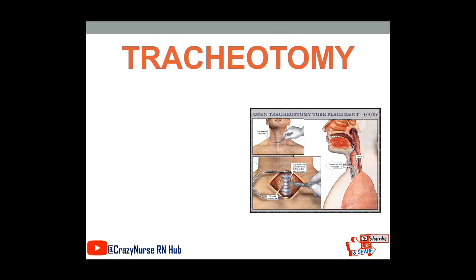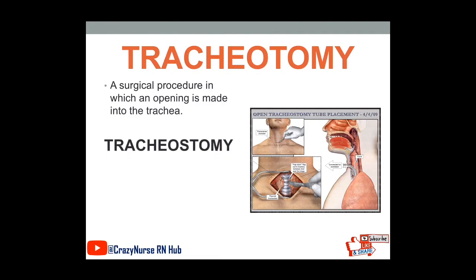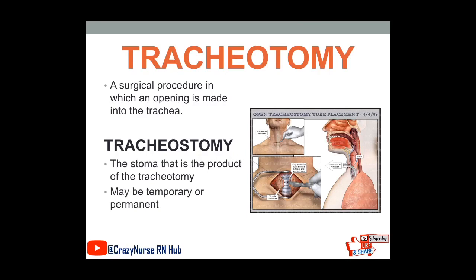We also have tracheotomy, a surgical procedure in which an opening is made into the trachea. We also have tracheostomy — this is the stoma that is the product of tracheotomy, and it may be temporary or permanent. That surgical incision in the trachea to make an opening is called a tracheotomy, and the stoma created because of that surgical procedure is called the tracheostomy. This is done in order to have airway access to the upper airway.